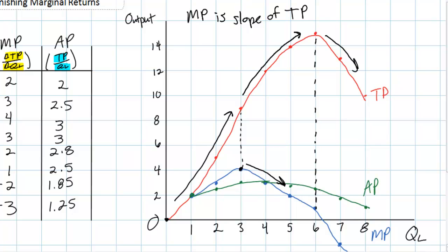This is certainly not an optimal level of employment in our paper chain factory. If I were the owner of this factory, I would never want to hire seven workers because the output attributable to that seventh worker is negative and my firm's total output actually falls. Let's summarize the relationships between marginal product and total product.